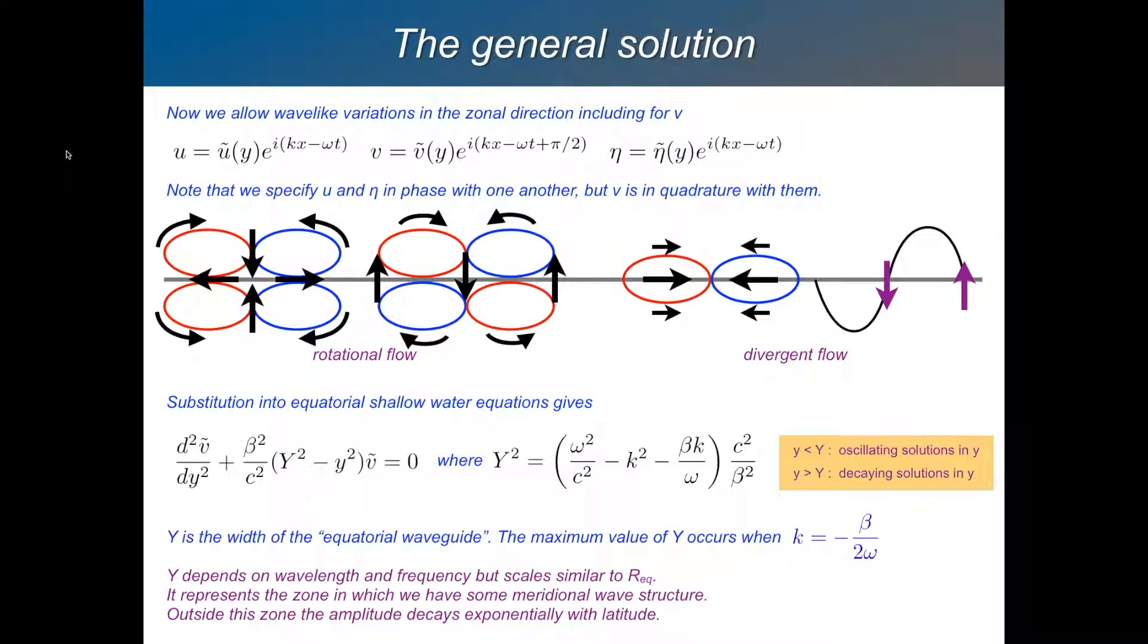The general solution. We go back to our shallow water equations, our equatorial shallow water equations, which I haven't bothered to write out again, but what I want to do is substitute in these expressions to those shallow water equations for the solutions. We're looking for wave-like solutions, all kinds of wave-like solutions which propagate along the equator in the x direction, positive or negative. And so we're saying that these solutions have this form.